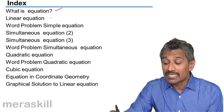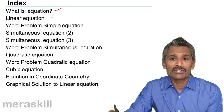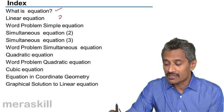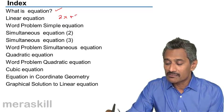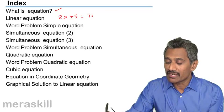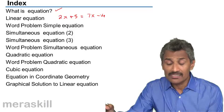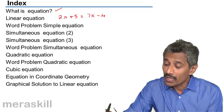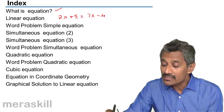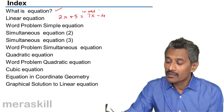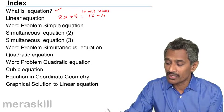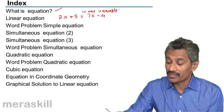Then we are going to take up linear equations. Linear equations are generally equations like 2x plus 5 is equal to 7x minus 4. So this is a linear equation having only one unknown. So we call it as a linear equation in one variable because there is only one unknown over here.